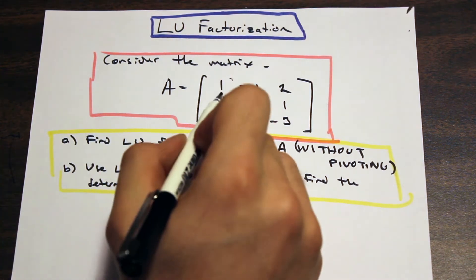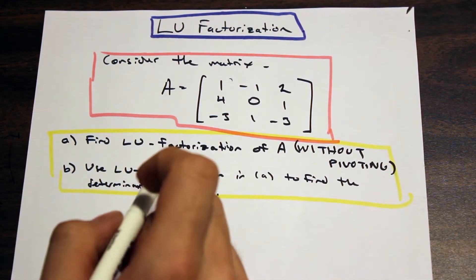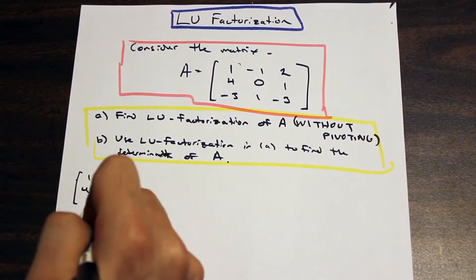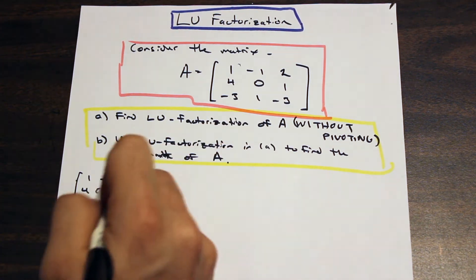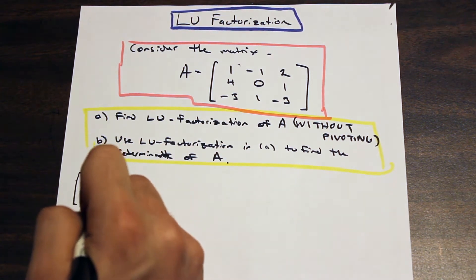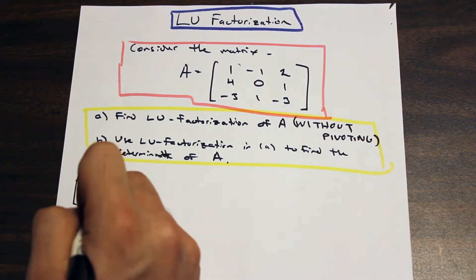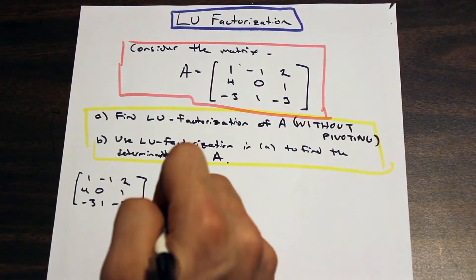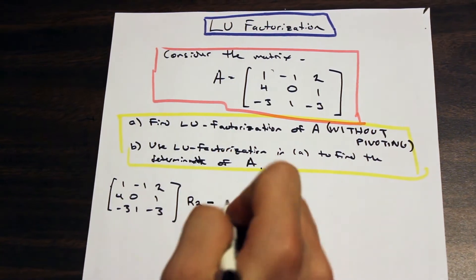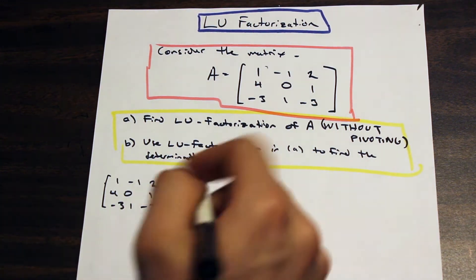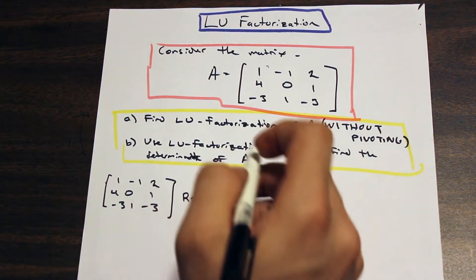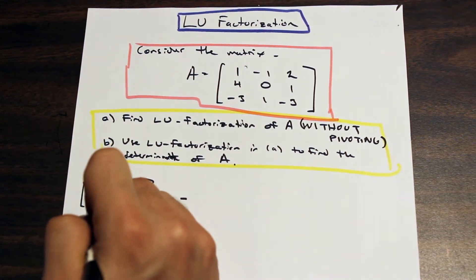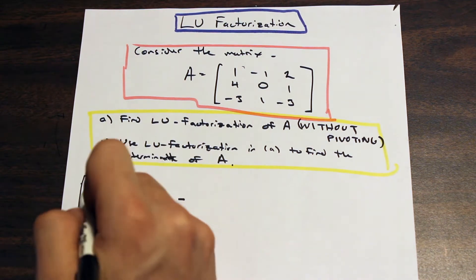Let's do our first row reduction. Our initial matrix has entries: row 1 is (1, -1, 2), row 2 is (4, 0, 1), row 3 is (-3, 1, -3). We want to eliminate the first entries in row 2 and row 3. For row 2, we subtract some multiple of row 1. In LU factorization, we always subtract and keep the negative sign in the factor we use.